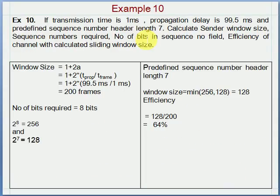The last example asks us to calculate window size given the sequence numbers. Sequence number bits are already given in the header as 7, and we calculate the required window size as 200 frames. However, since the bits are 7, we must select window size as 128, which affects overall efficiency, giving only 64% efficiency. We can solve many more problems using the same logic.